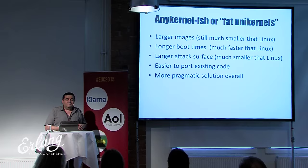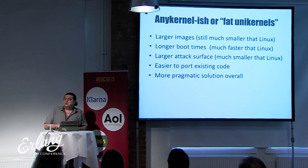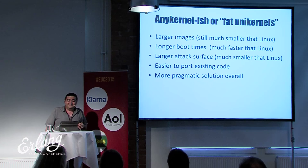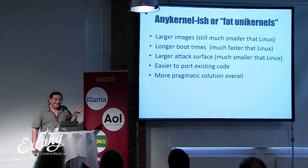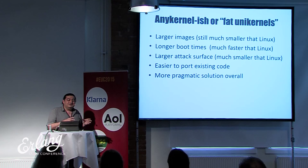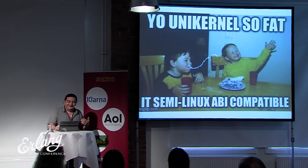The other type — more generic unikernels, also called anykernel-ish or fat unikernels — have slightly larger images but still much smaller than Linux. They have longer boot times, still much faster than Linux, and a larger attack surface, still much smaller than traditional OSes. But they are much easier to port existing code to, and in my opinion a more pragmatic solution overall. OSV is one example.